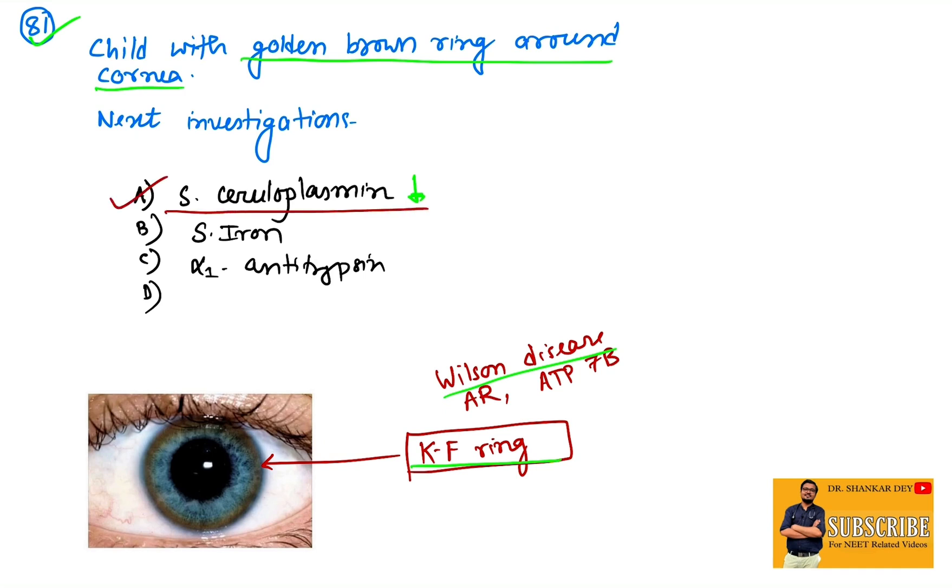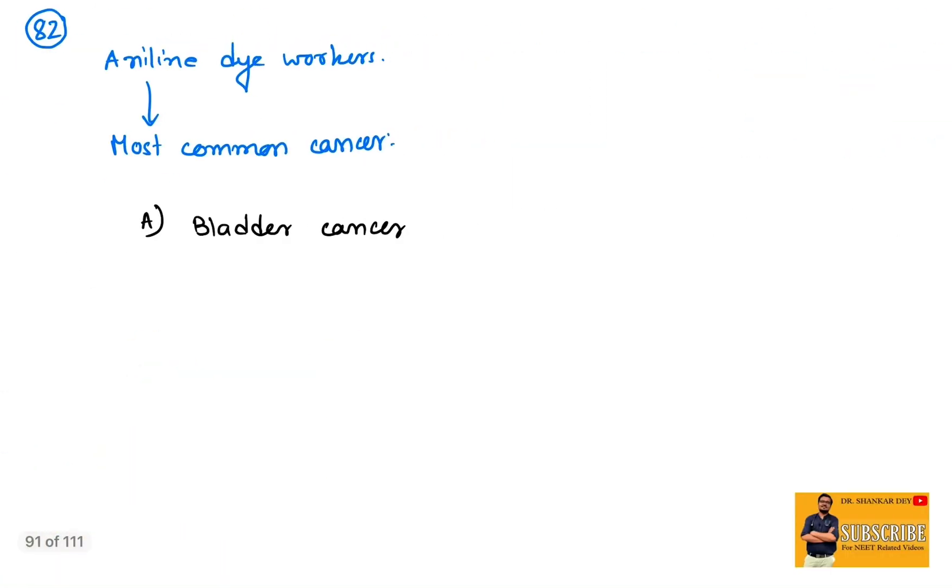Coming to question number 82, straightforward question: aniline dye workers are more prone to develop which type of cancer? Bladder cancer. Straightforward question about chemical carcinogens, a very important topic—chemical carcinogens and microbial carcinogens for competitive exams.